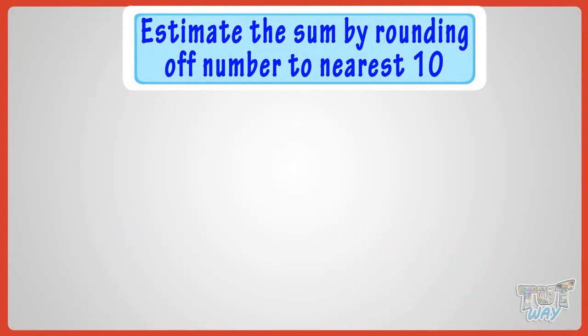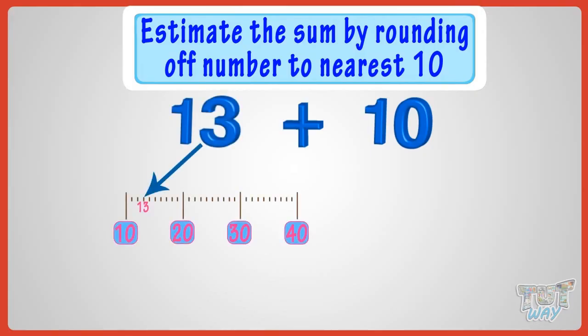You have to add 13 and 10. 13 is midway between two 10s, so we will round off 13 to nearest 10. 13 will be rounded down to 10, as it's below the 5 mark.